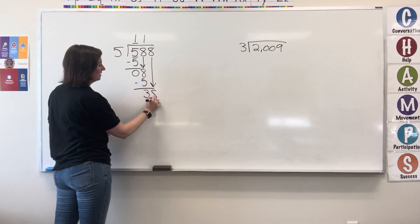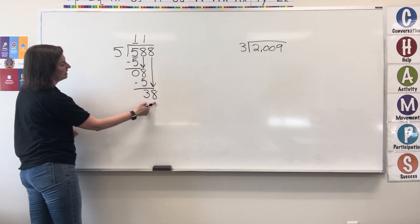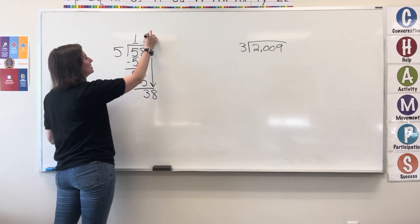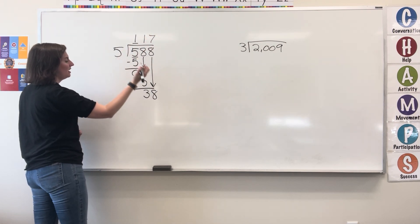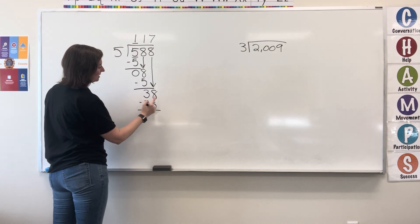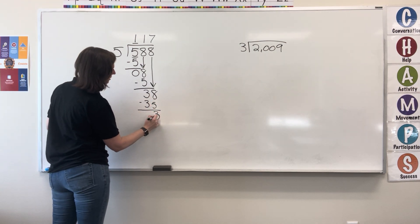Bring down the 8. 5 fits into 38 seven times. 7 times 5 equals 35. Write the 35. Now subtract. 8 minus 5 equals 3. Write the 3.